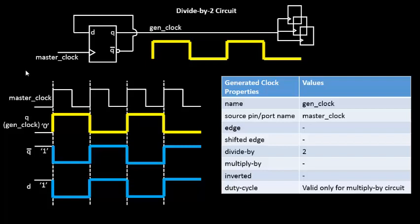Let's first identify the edges for this particular master clock. Let's say this is the first edge of the master clock, this is the second edge, this is the third, fourth, fifth, and so on. So let's try to find a relationship between the edges of the master clock and the generated clock.